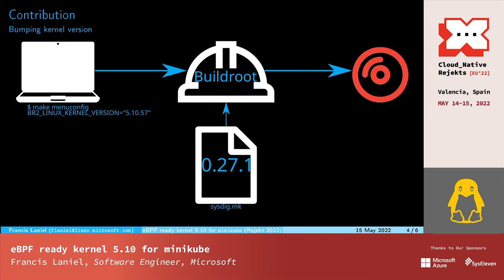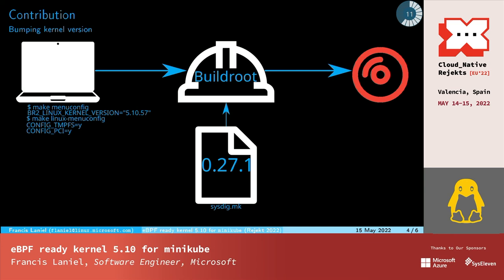I was able to get an image, but sadly it doesn't boot. So I ran make linux-menuconfig to add config options to the kernel running inside the image. The first option I needed was CONFIG_TMPFS, because the init inside the image tries to mount a directory as tmpfs. The second was CONFIG_PCI, to be able to use Ethernet networking inside the image. The last one was CONFIG_BRIDGE_NETFILTER, because kubeadm needs a file under /proc which is added by this configuration.